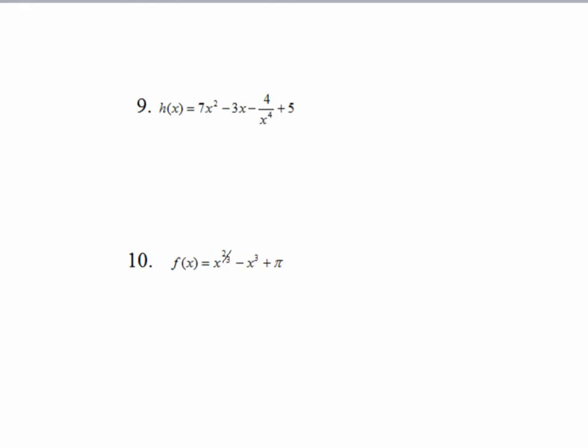In number 9, when you look through h of x, there's really only one piece that needs to be rewritten. So let's take that piece off to the side and think about it as negative 4x to the negative 4th. Now let's take the derivative. Using our basic rules, the derivative of 7x squared is 14x.